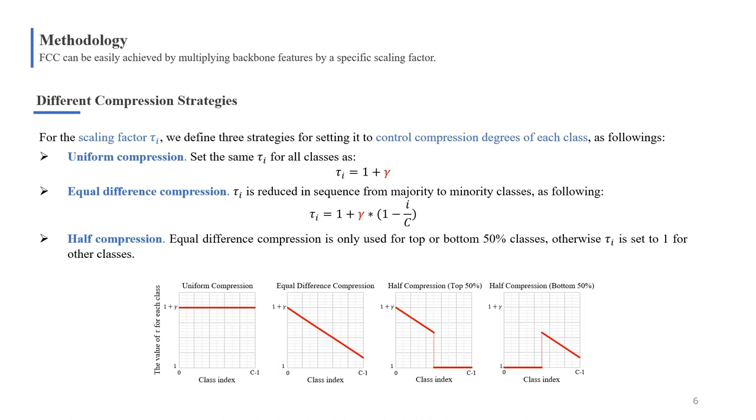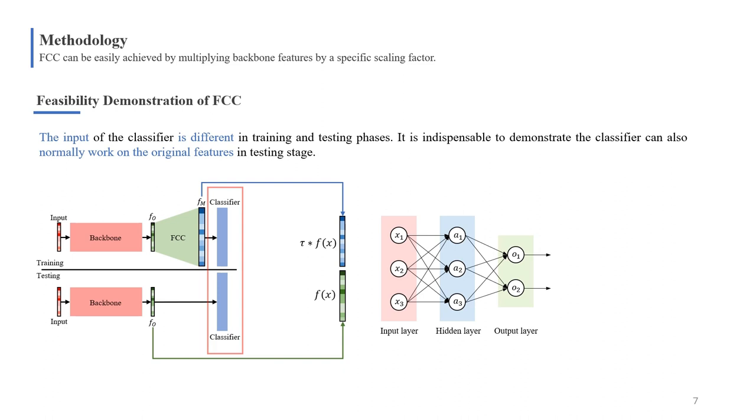For controlling compression degrees of each class, we define three strategies for setting the factor τ: uniform compression, equal difference compression, and half compression. The value of τ is shown in the following figure.